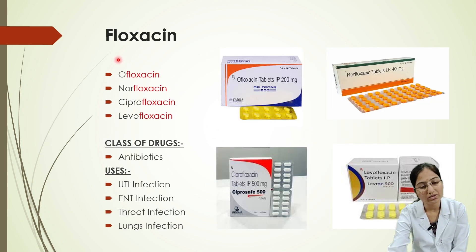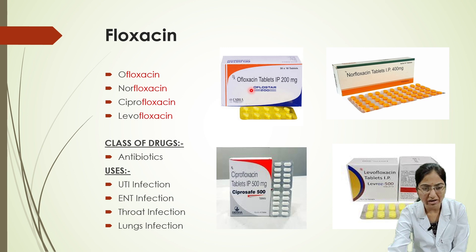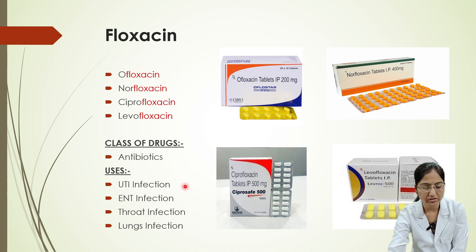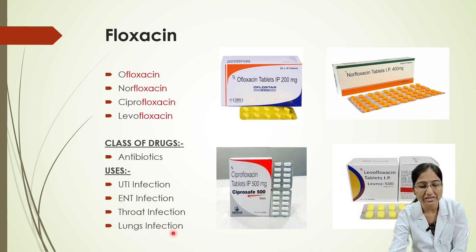Next, we'll look at drugs whose names end with '-floxacin'. Examples include ofloxacin and norfloxacin. These drugs belong to the class of antibiotics, and they are used for urinary tract infections, ENT (ear, nose, and throat) infections, and lung infections.